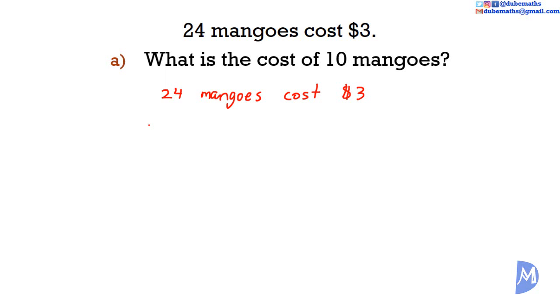We are asked to find out the cost of 10 mangoes. The fraction is 10 over 24 and we multiply by the conversion factor which is $3. 10 over 24 multiplied by $3 is equal to $1.25.